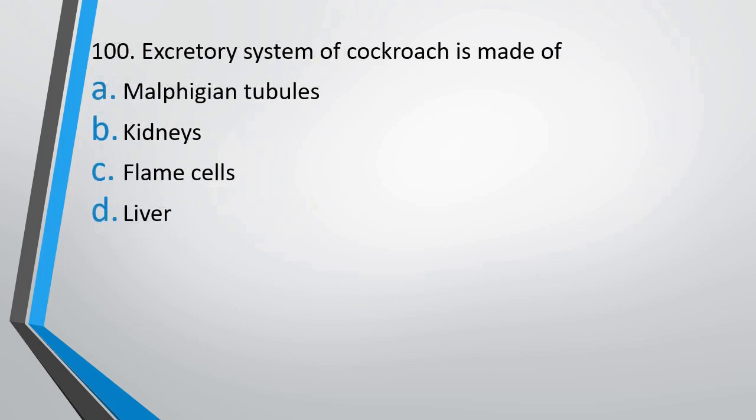Question number 100: The excretory system in cockroach is made of — Malpighian tubules, kidneys, flame cells, or liver? The correct answer is option A, Malpighian tubules.